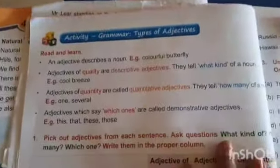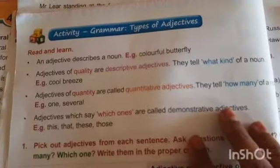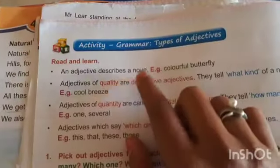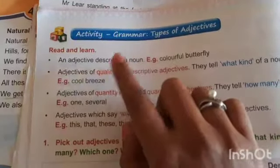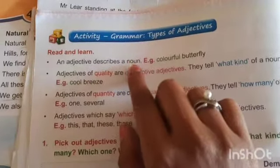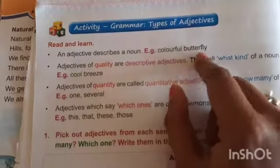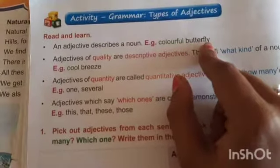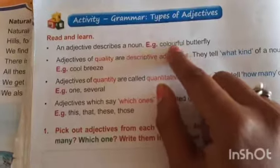In grammar, we are going to learn about types of adjectives. Can you tell me what adjectives are? An adjective is a word that describes a noun. A noun is a name of a person, place, animal, or thing. For example, 'colourful butterfly' — butterfly is a noun, and 'colourful' is the word that describes this noun, so it is an adjective.